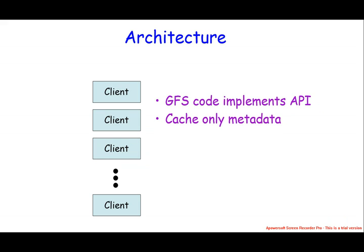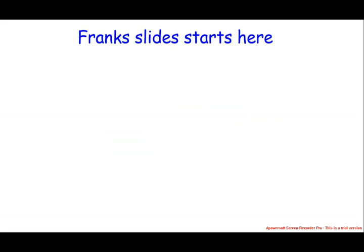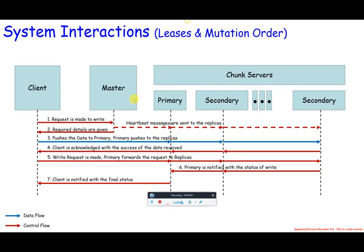A mutation is an operation that changes the contents or metadata of a chunk, such as a write or an append. Each mutation should happen in all replicas. The primary is the closest replica to the client.